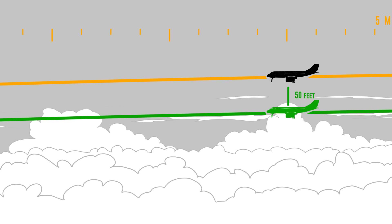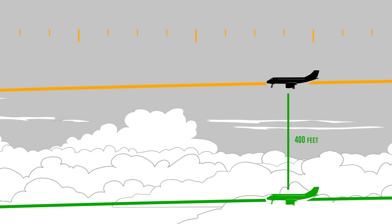So when they reached the five mile mark, they were about 400 feet above the desired glide path altitude. So they're high.